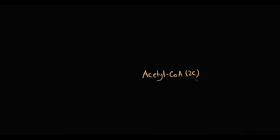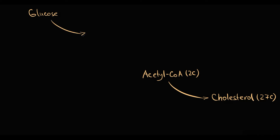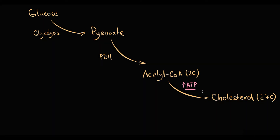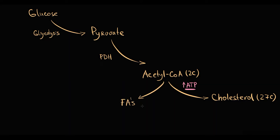In cholesterol synthesis, the goal is to make from multiple acetyl-CoA molecules that have only two carbons, one cholesterol molecule with 27 carbons. Acetyl-CoA molecules are formed by degradation of multiple glucose molecules. Recall that glucose incoming to the cell undergoes glycolysis that results in production of pyruvate, and pyruvate by pyruvate dehydrogenase is converted into acetyl-CoA. In a well-fed state, when tissue is fully saturated with energy, acetyl-CoA molecules are usually used in fatty acid synthesis or for production of cholesterol.